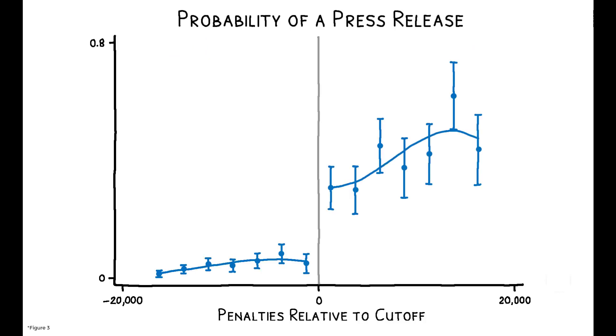This figure shows that the probability of having a press release jumps by 20 to 25 percentage points as soon as penalties cross the threshold.